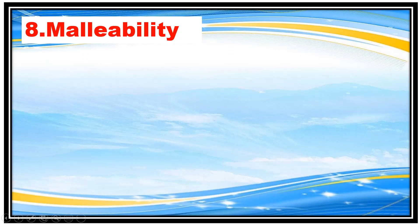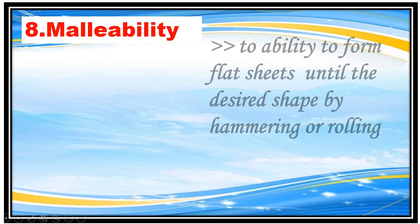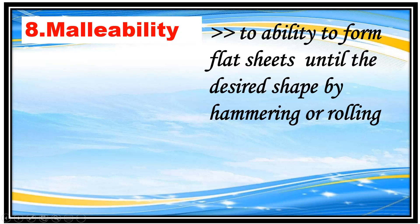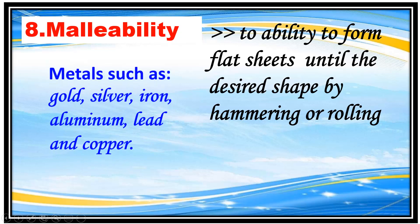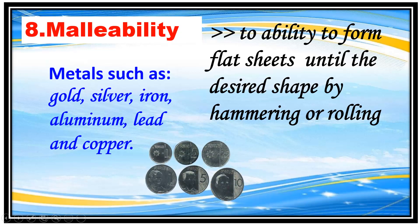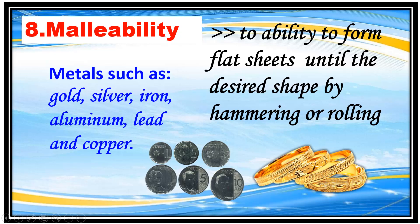Number 8 is the ability of materials to form flat sheets into the desired shape by hammering or rolling metals, such as gold, silver, iron, aluminum, lead, and copper. Examples include coins and jewelry.